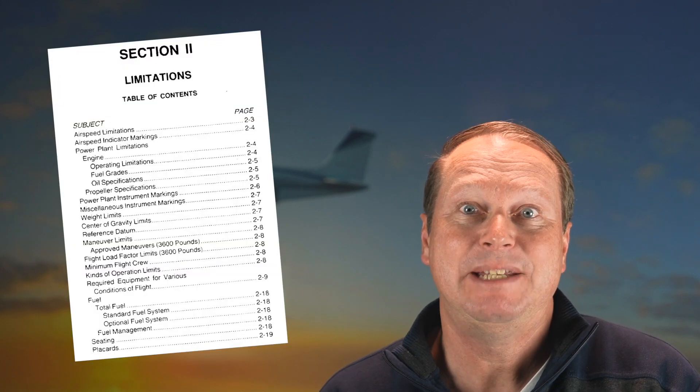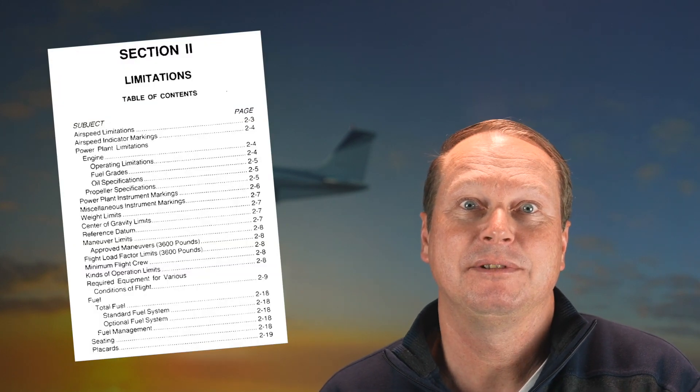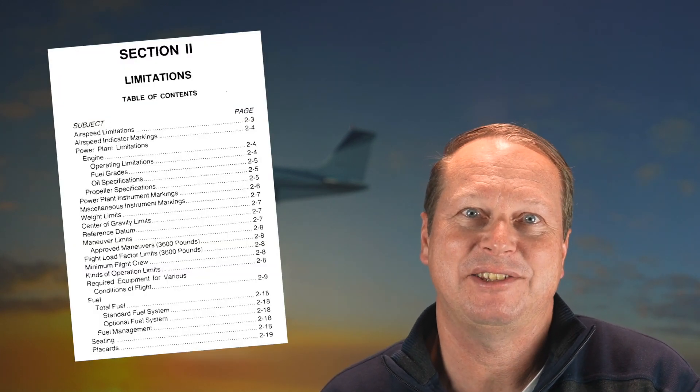There are many things pilots have to know about the airplanes they fly. An important source of information is the Pilot Operating Handbook and Airplane Flight Manual — the POH and AFM — and you need to be familiar with that. Within the AFM, there's a section called Limitations, which has a somewhat special status.